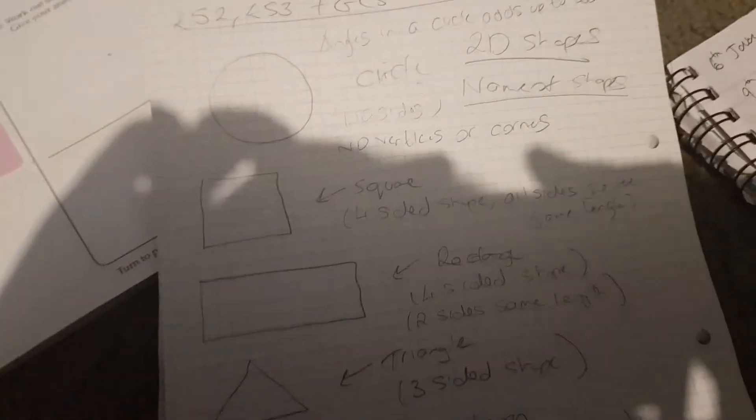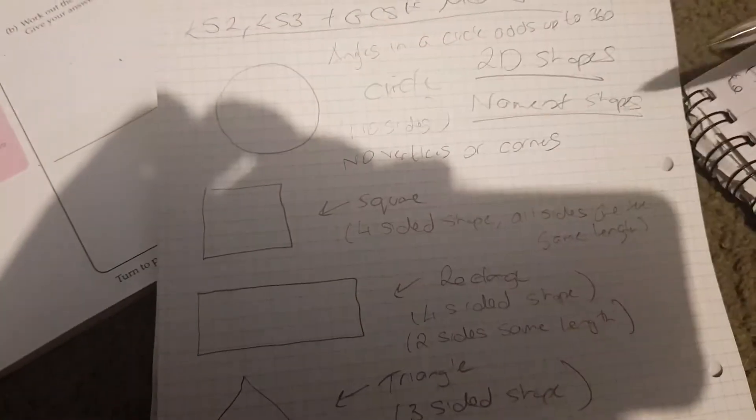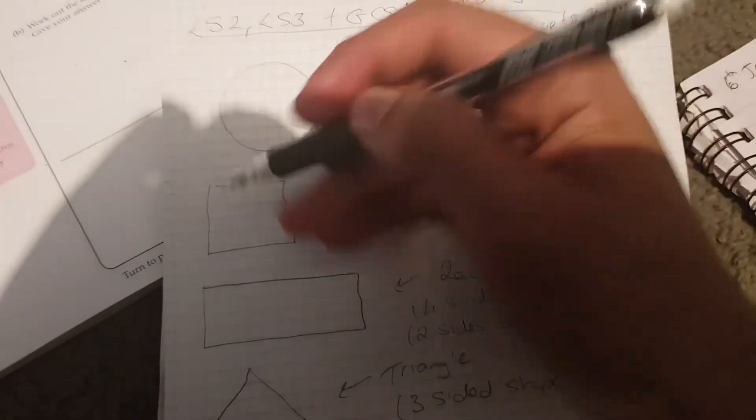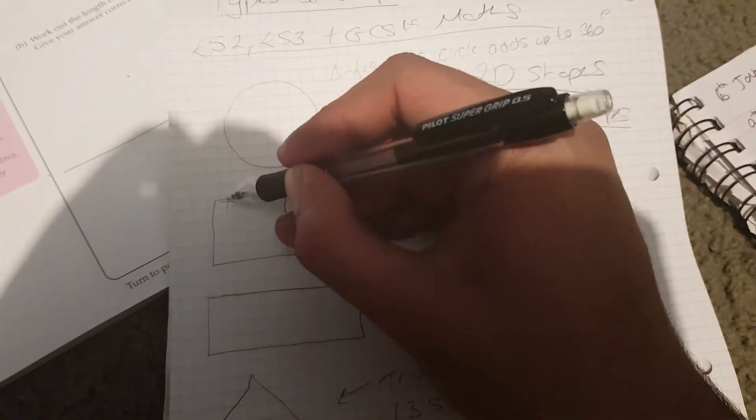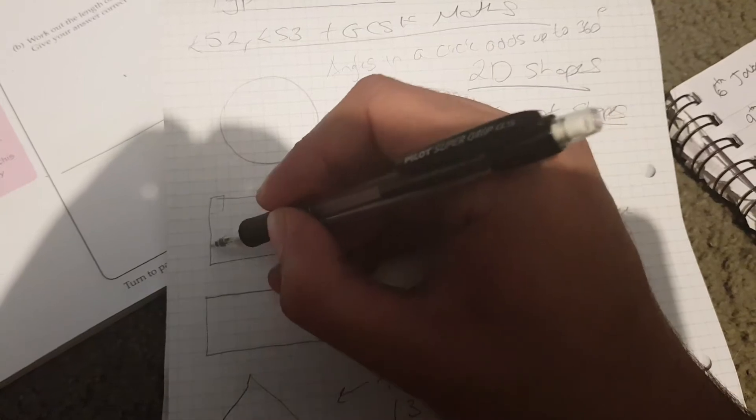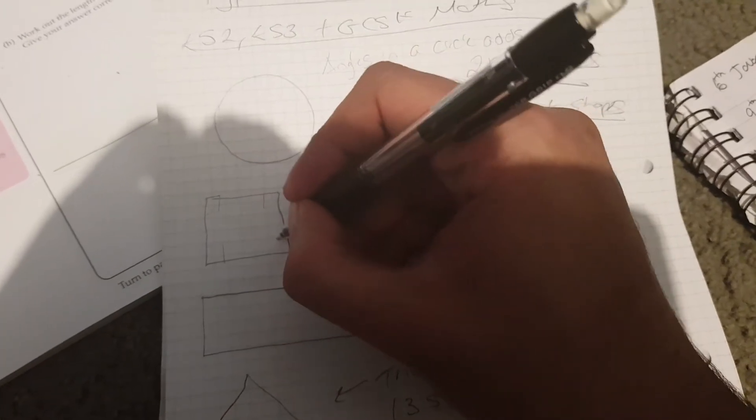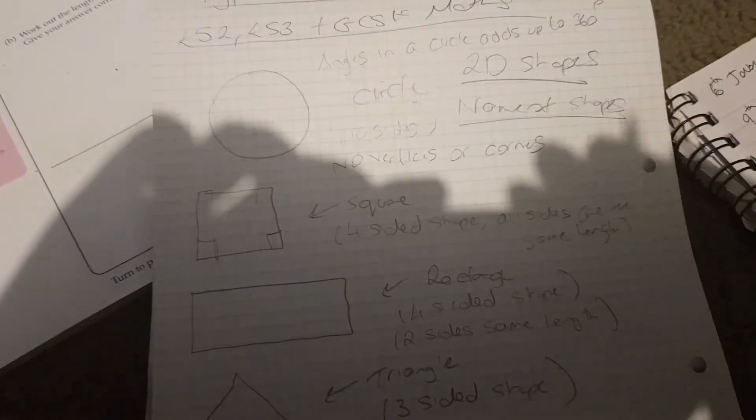A square is a four-sided shape. So one, two, three, four sides. So a square, all these are going to be right angles. So if all these are right angles, then by definition, angles in a square add up to 360.